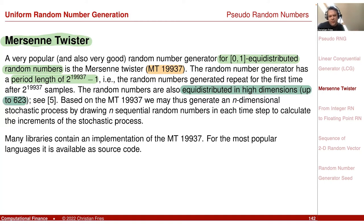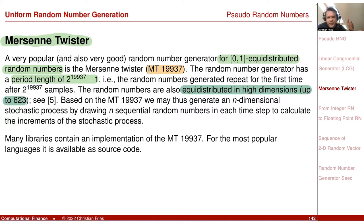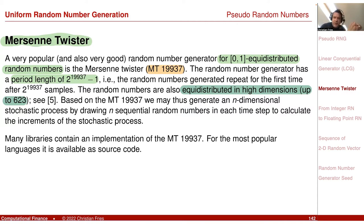You might think that 623 dimensions is an enormous number and no application would need such a high-dimensional sequence. But when we do Monte Carlo for stochastic processes — random variables that depend on time — it turns out that each time step in a time discretization is a dimension, because you have independent increments. You can easily reach 600 dimensions by taking just 100 time steps of six values. So it's important to have a generator with these nice properties.